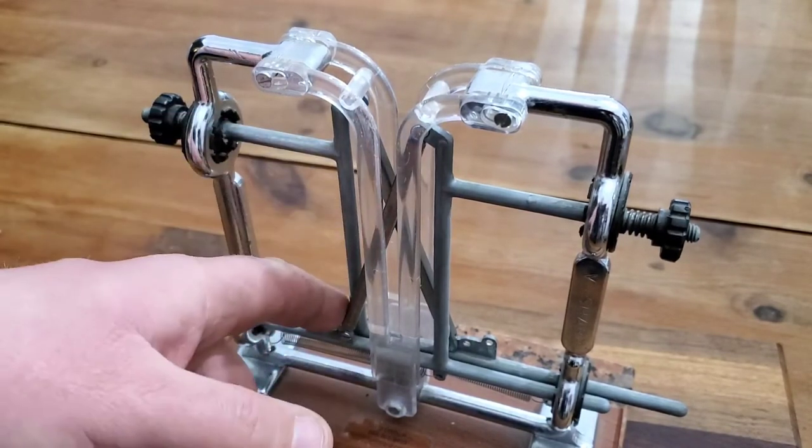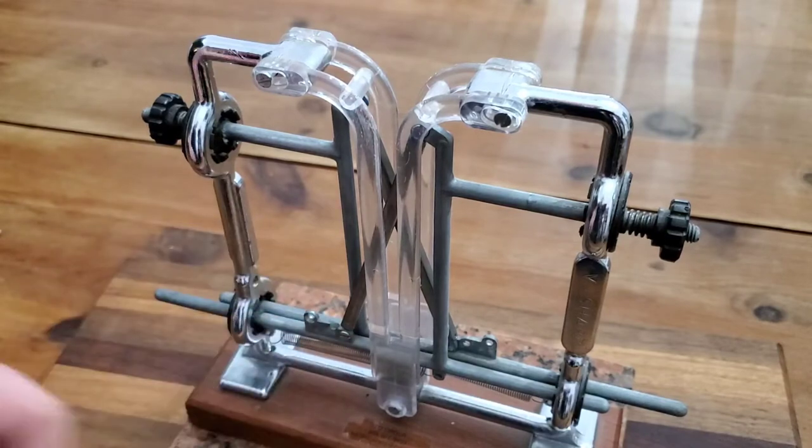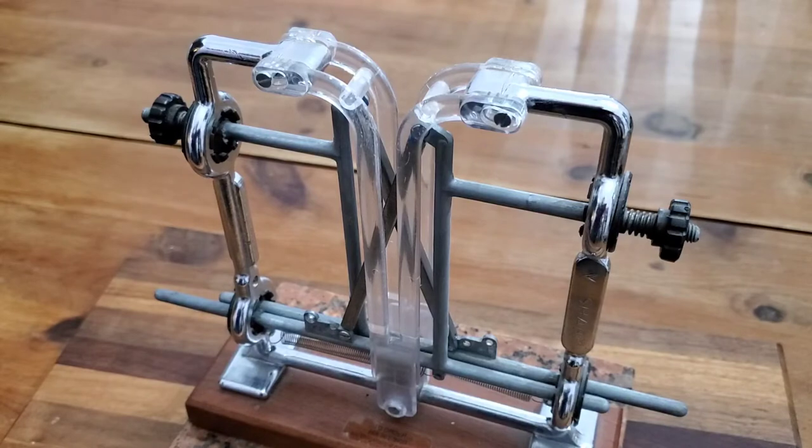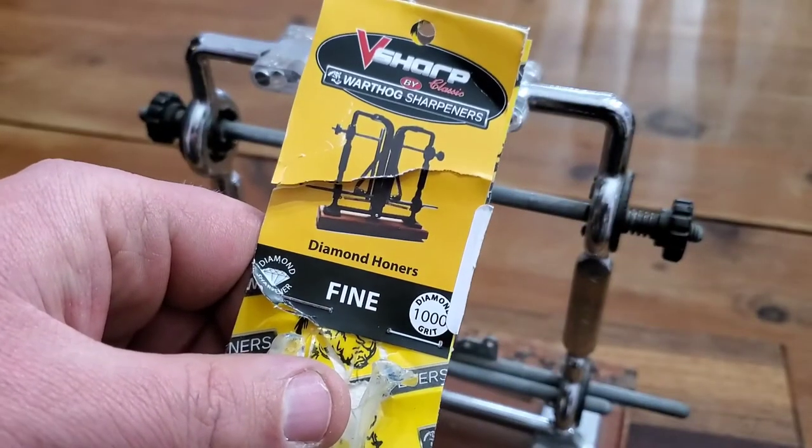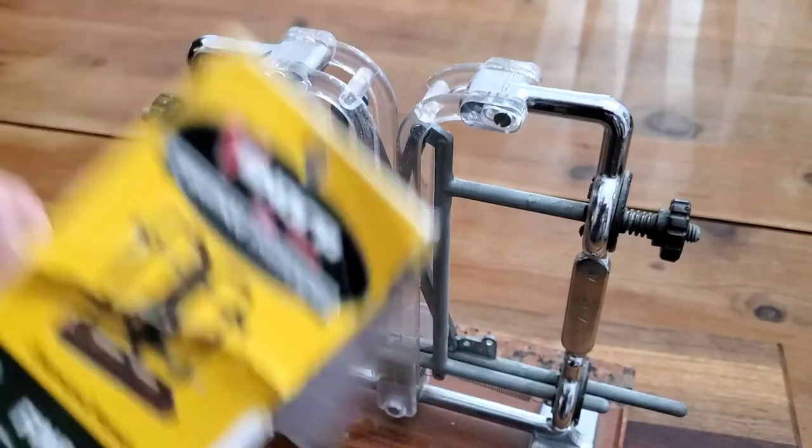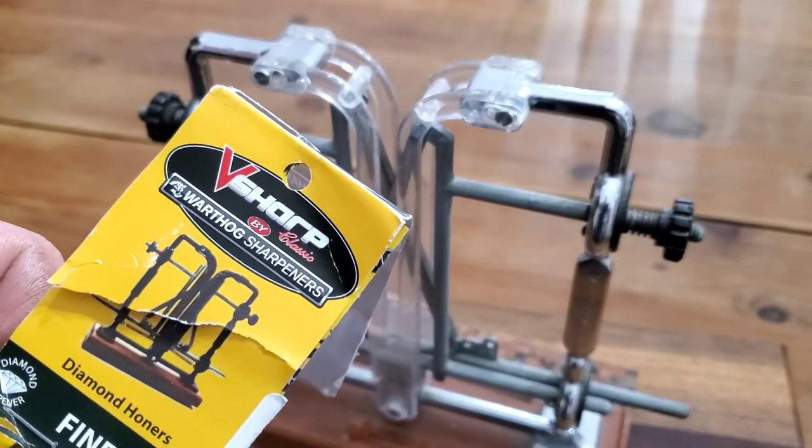But what I'm going to try to do is I have bought some new stones for it. I call them stones, they're not really stones. This one calls it honers, but they're fine. Thousand grit. Now, they're made by Warthog, a company that makes the sharpener.